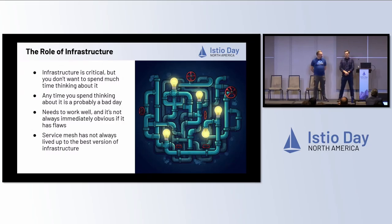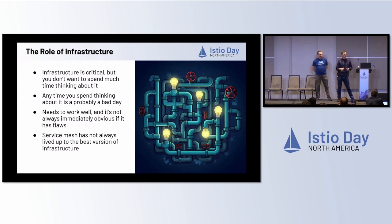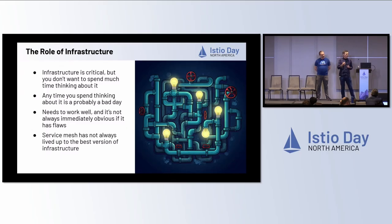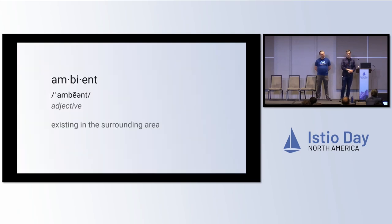There's an analogy that's been brought up many times: infrastructure is really a lot like plumbing in your house. It's critical, and you really don't want to spend a lot of time thinking about it. But when you have problems, it's all you can think about. Service Mesh has not always been great about making it disappear into the infrastructure or into the ether. And so what we wanted to look at is, is there a way that we can better manage the service mesh? And that's where Ambient came along.